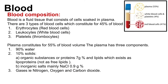Blood is a fluid tissue that consists of cells that are soaked in plasma. There are three types of blood cells, which constitute 45% of blood. Firstly, erythrocytes, which are red blood cells. Secondly, leucocytes, which are white blood cells. And finally, platelets, which are thrombocytes.